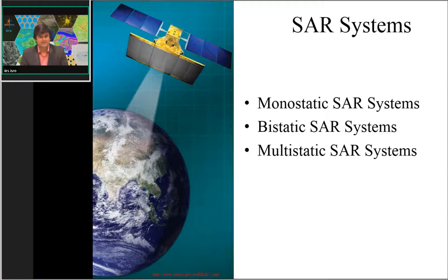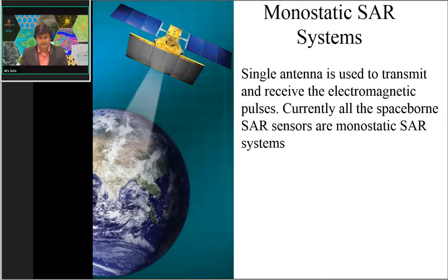SAR systems are mainly categorized into three categories: monostatic SAR systems, bistatic SAR systems, and multi-static SAR systems. In monostatic SAR systems, a single antenna is used to transmit the electromagnetic pulses, and the same antenna is used to receive the scattered electromagnetic signals.